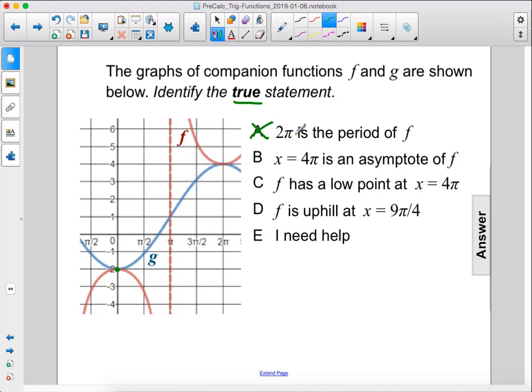So 2π is not the period. 4π is the period because you can see halfway through we're up here and that's at 2π. So by the point we get another graph piece that looks like this, that will be twice as far. So this is false.